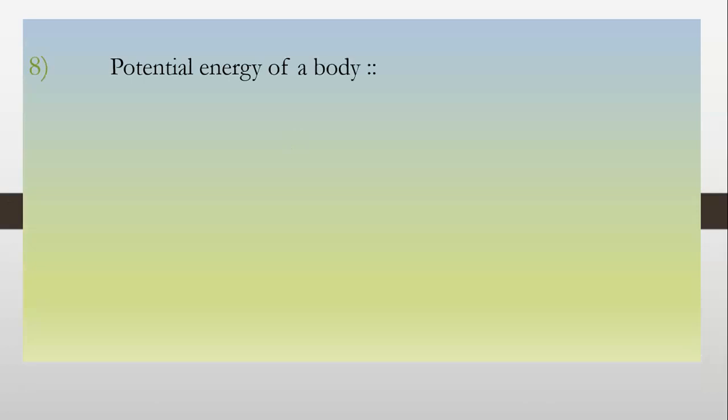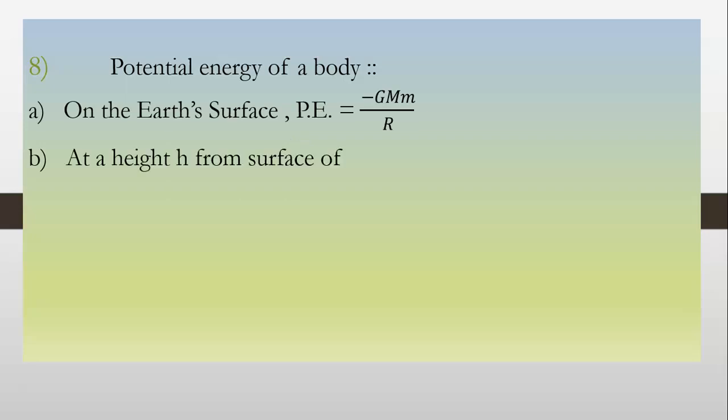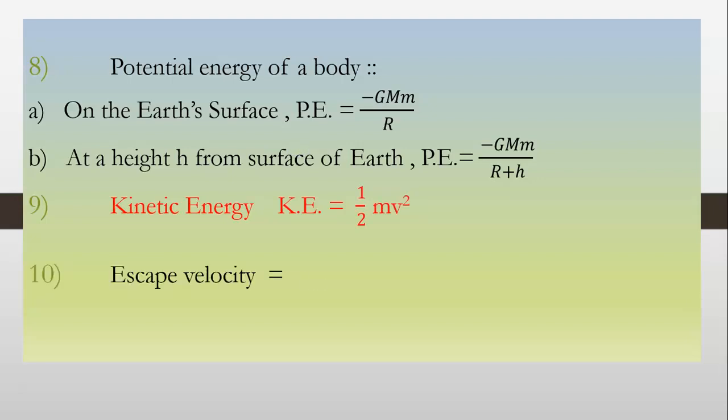Potential energy of a body on the Earth's surface: PE = -GMm/R. At a height h from surface of Earth, potential energy is equal to -GMm/(R+h). Kinetic energy KE is equal to half MV square. Escape velocity Vs is equal to square root of 2GM/R or square root of 2gR.